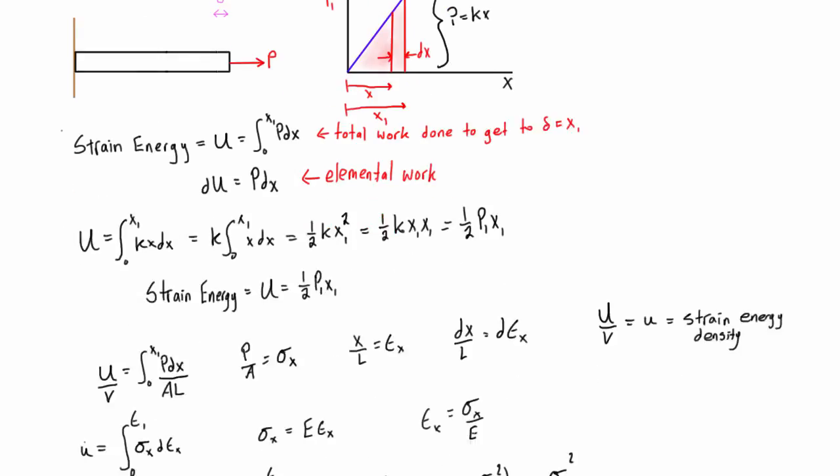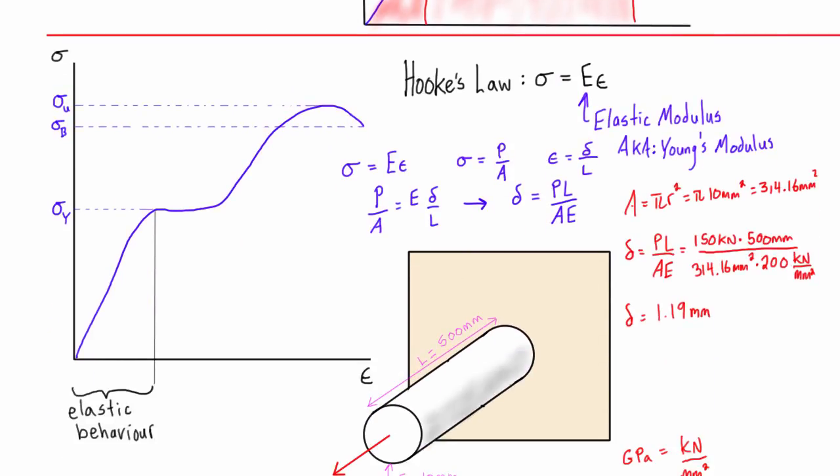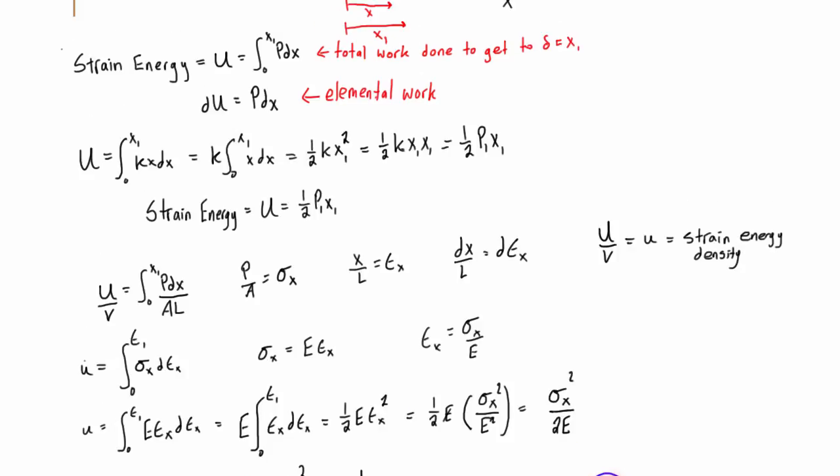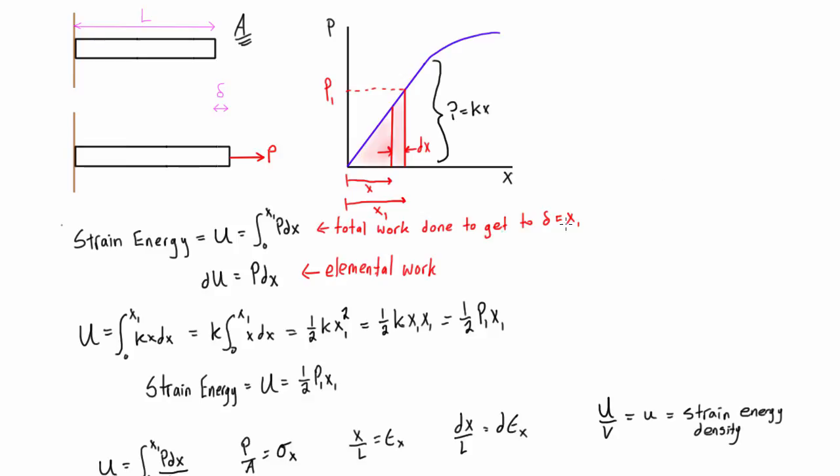Well, in this case, we know that if we call P1 150 kilonewtons, and x1 1.19 millimeters, then we would have one half P1 times 150 kilonewtons. Actually, let's just write this as 150,000 newtons, times our x1.